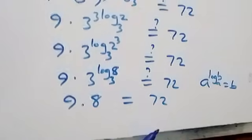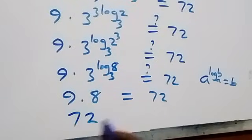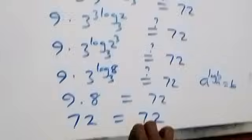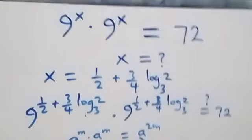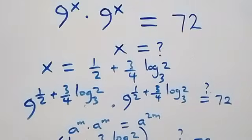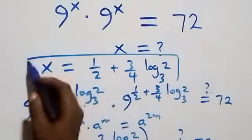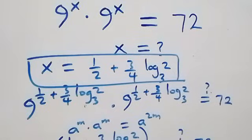Indeed, 9 times 8 equals 72, which matches the right-hand side. The left-hand side equals the right-hand side, and hence we conclude that x equals 1/2 plus (3/4)·log₃2 is the solution.